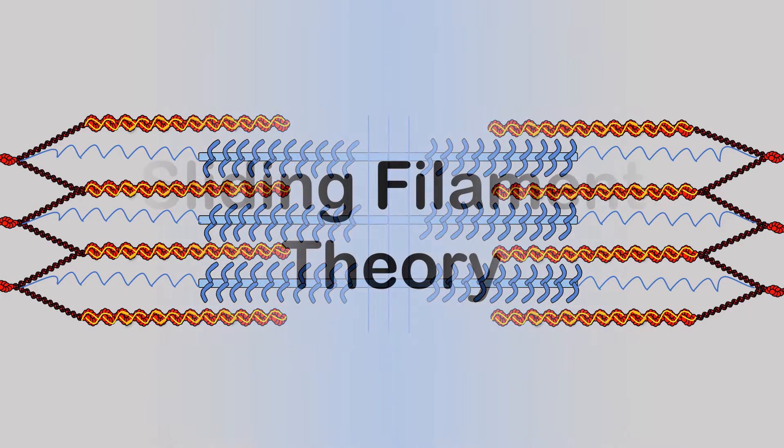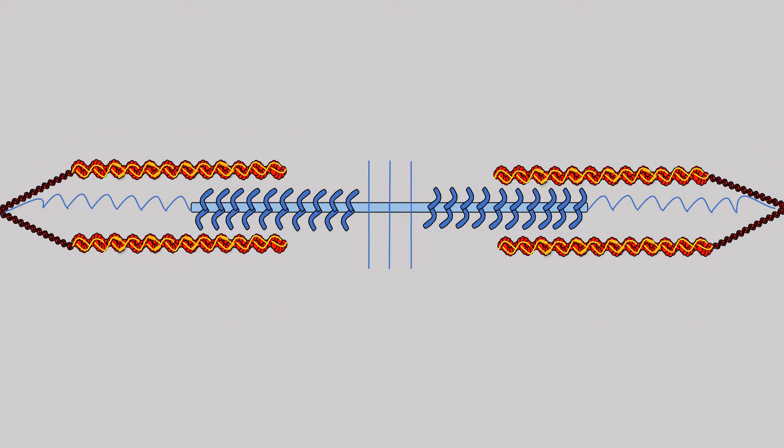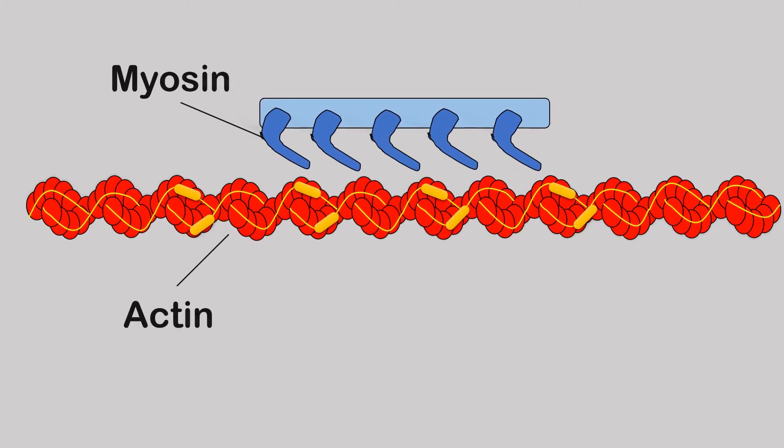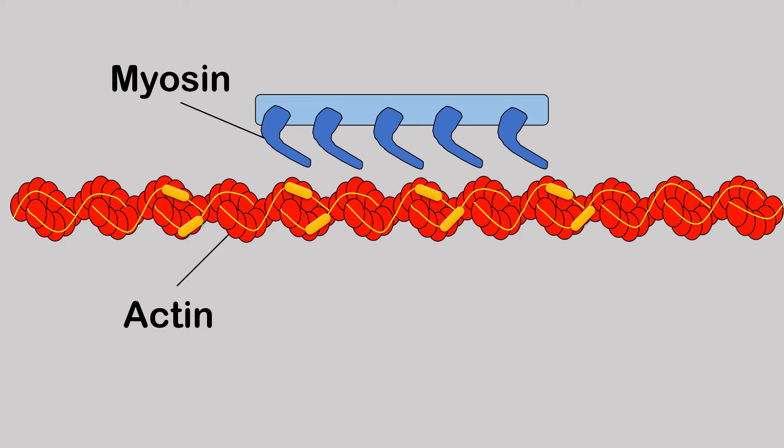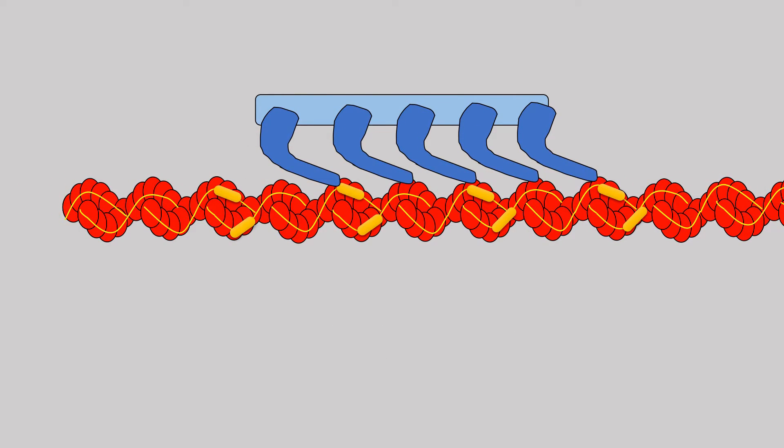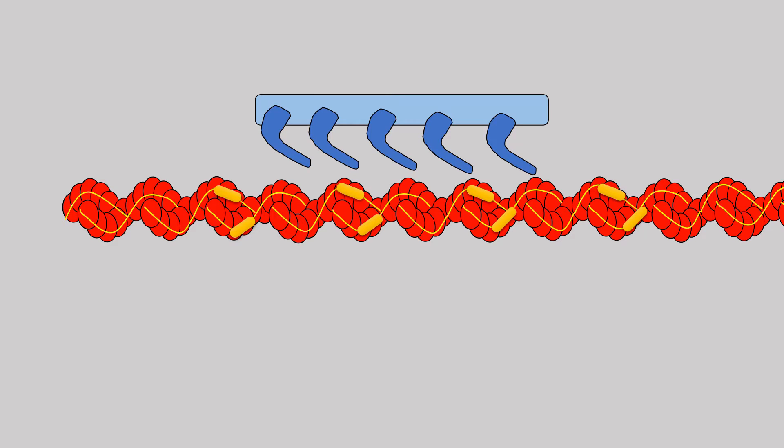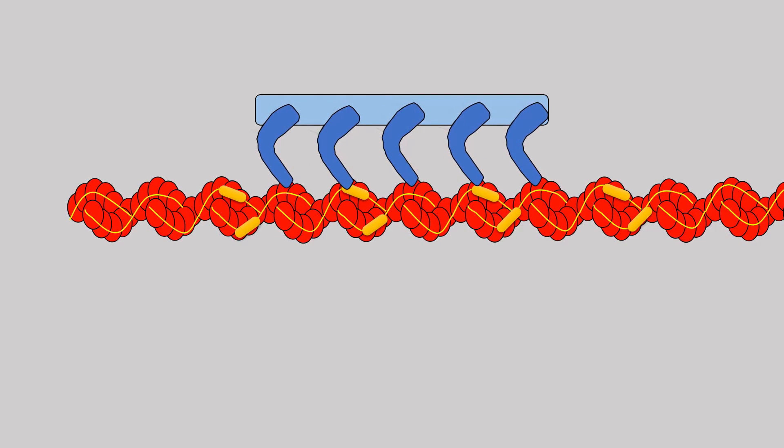So the sliding filament theory is one of the most common theories about how a muscle contraction actually occurs, and it predominantly revolves around the myosin hooks and the actin heads. So as you can see here with the myosin hooks and the actin heads, all the myosin does is attach to the actin to make a cross bridge and then pulls it towards the M-line. Then it detaches and then reattaches at a later point on the actin head and then pulls it again to the M-line. It's just as simple as that.